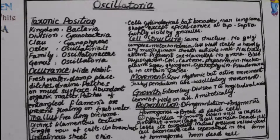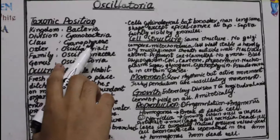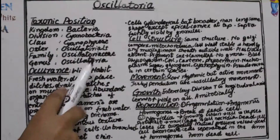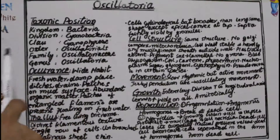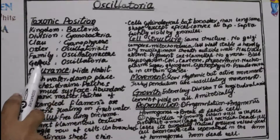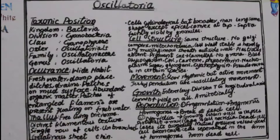We'll see some characteristics of Oscillatoria. First of all, the taxonomic position: Kingdom Bacteria, Division Cyanobacteria, Class Cyanophyceae, Order Oscillatorales, Family Oscillatoriaceae, and Genus Oscillatoria.